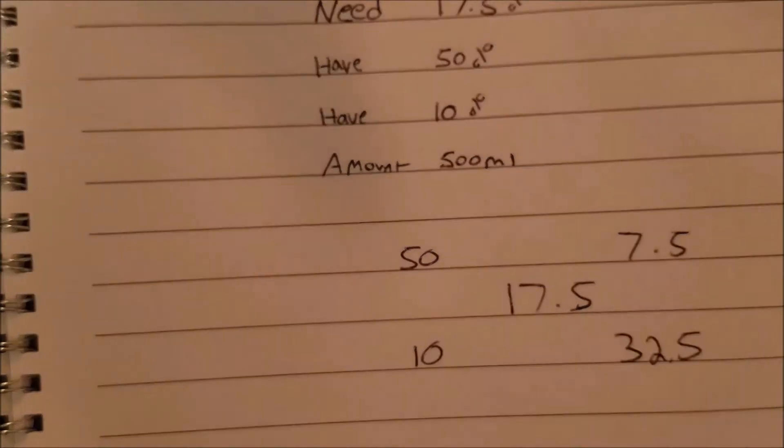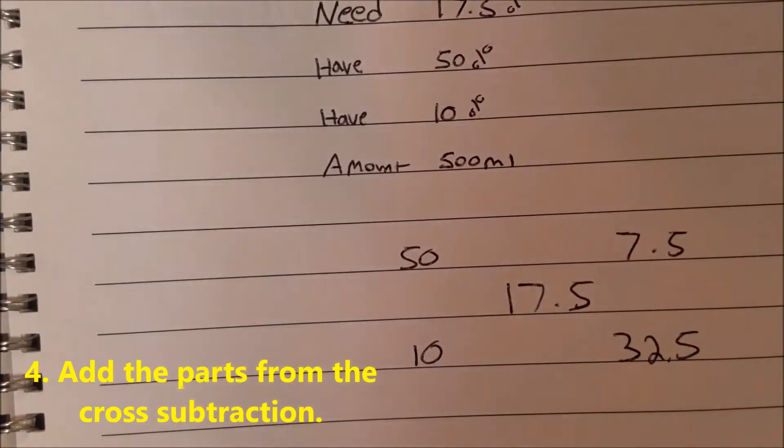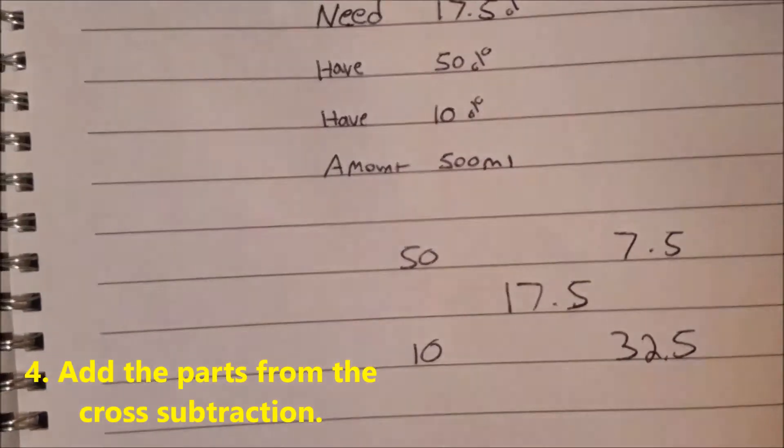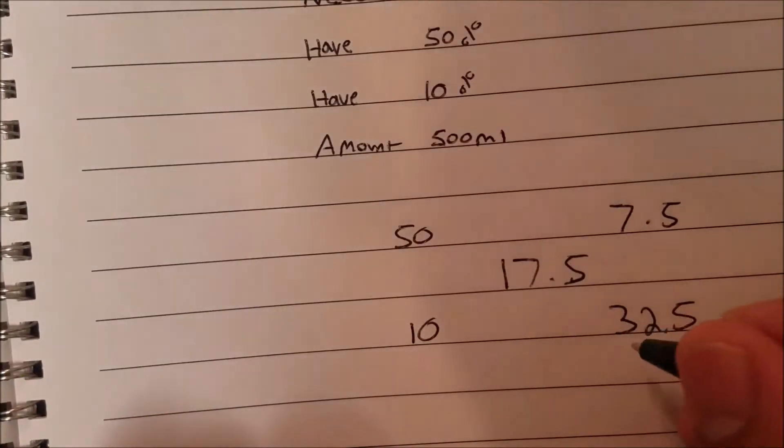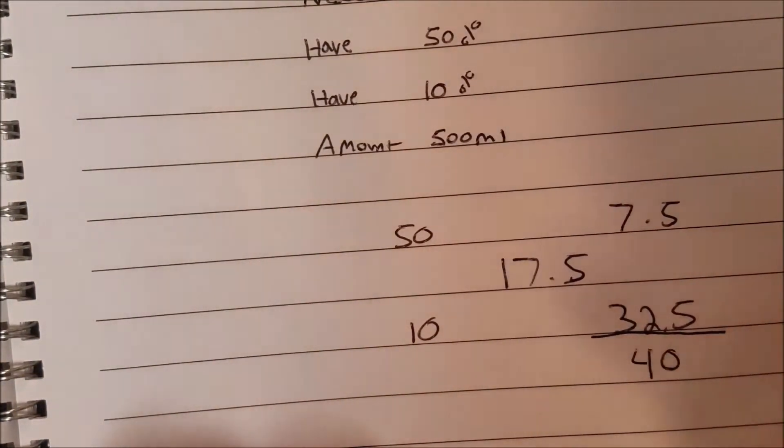Step 4: add the parts from the cross subtraction. So the 7.5% plus 32.5% is 40. I'm going to write 40 right here.